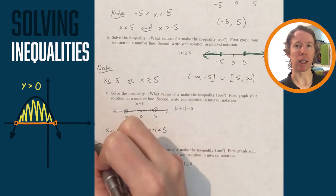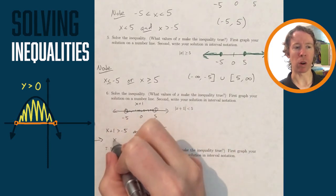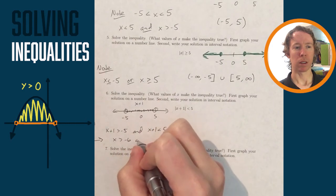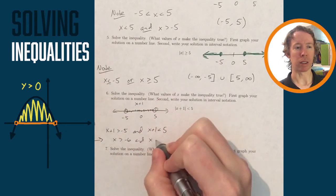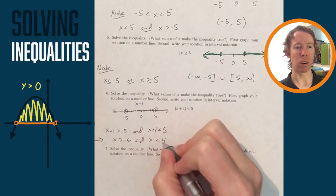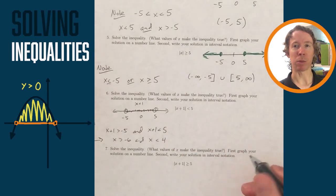Those two inequalities I can then manipulate. I can subtract 1 from both sides. So x is greater than negative 6 and x is less than 4, and that gives me my solution.